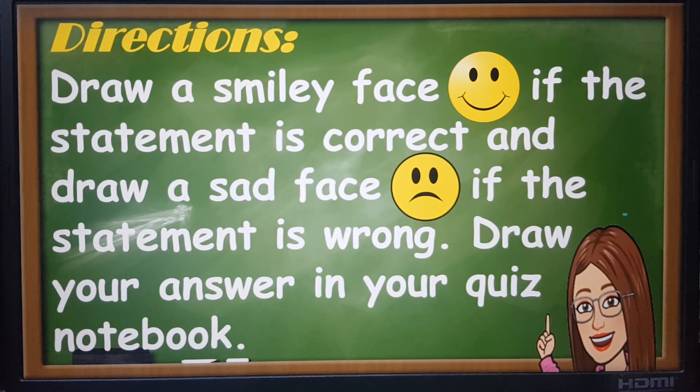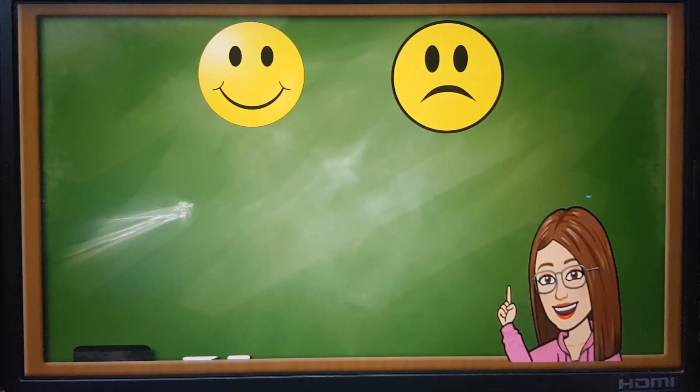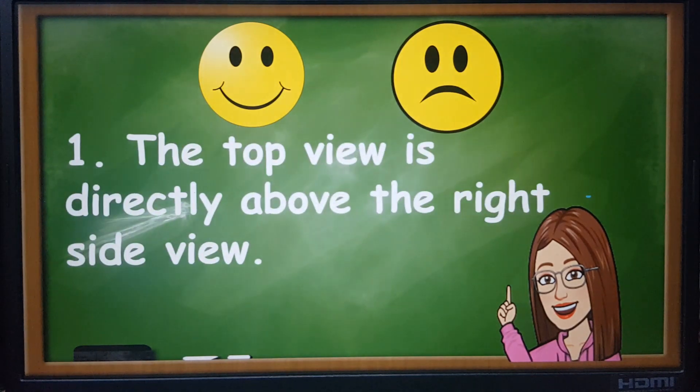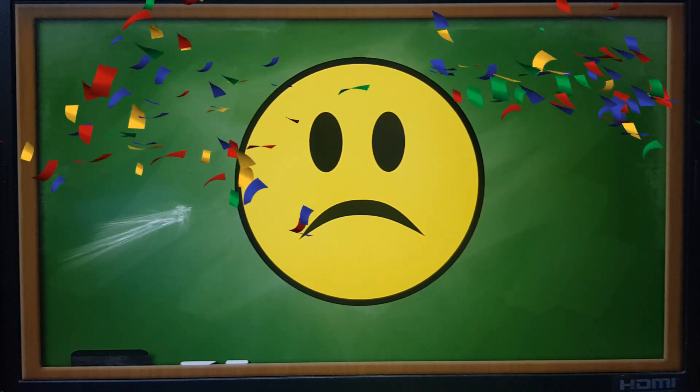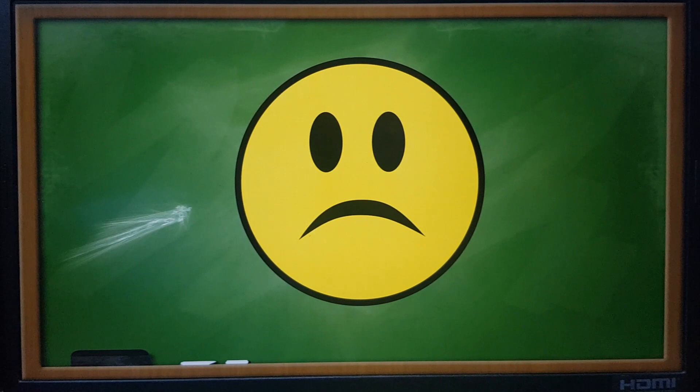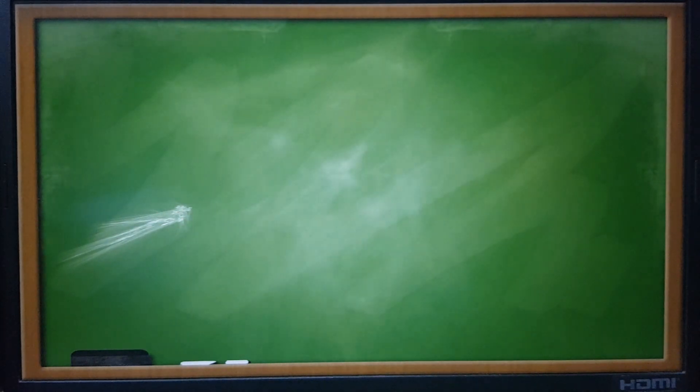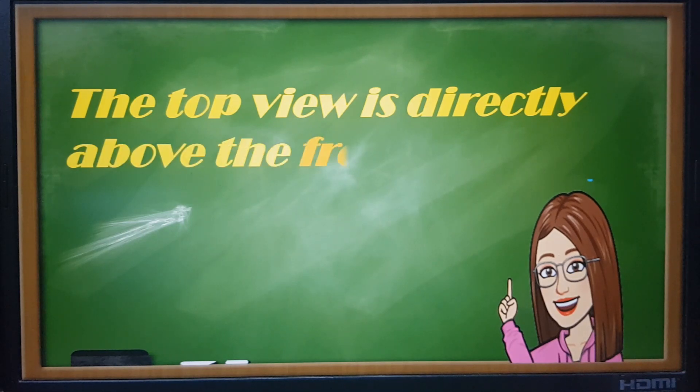Are you ready? Let's begin. Number one: the top view is directly above the right side view. If your answer is sad face, then you are right. Why sad face? Because the top view is directly above the front view.